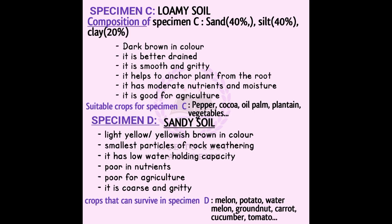Specimen C is loam soil. Loam soil is composed of sand, silt, and clay in roughly equal percentages. It is dark in color, well textured, smooth and slightly gritty. It anchors plants from the roots, has good nutrients and moisture retention, and is the best soil for agriculture. That is why a farmer would choose loam soil over sandy soil.